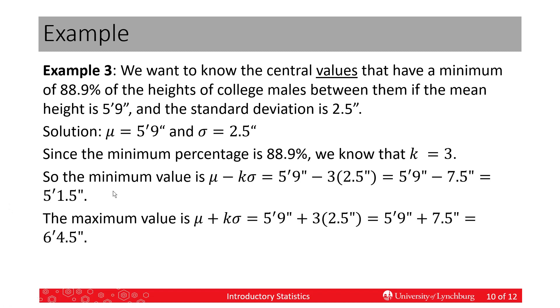The maximum value I'm looking for, the upper value, is mu plus k sigma. So, it's the same values, but a plus sign in between, and I get 6'4.5 inches. So, my answer is the two values are 5'1" to 6'4". And this is written as an interval.